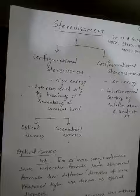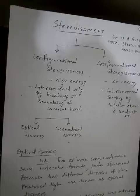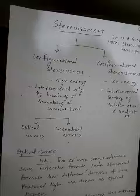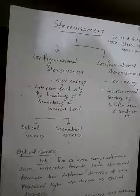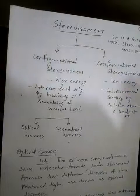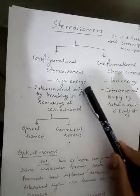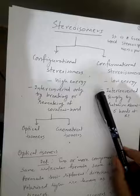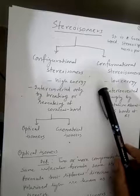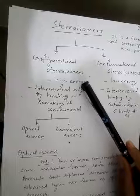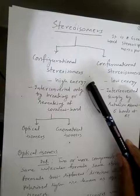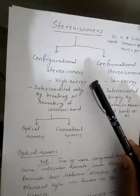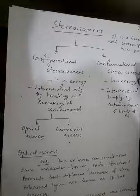The word 'Stereoisomers' is originated from the Greek word 'stereos', which means space, and 'mers' means parts. Stereoisomers are divided into two parts: configurational stereoisomers and conformational stereoisomers. Configurational stereoisomers have a high energy barrier, whereas conformational stereoisomers have a low energy barrier. This means configurational stereoisomers require high energy to convert from one form to another, whereas conformational stereoisomers require low energy.